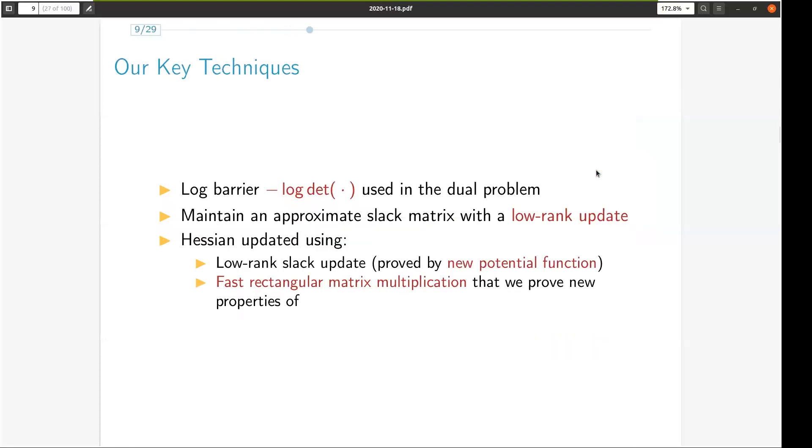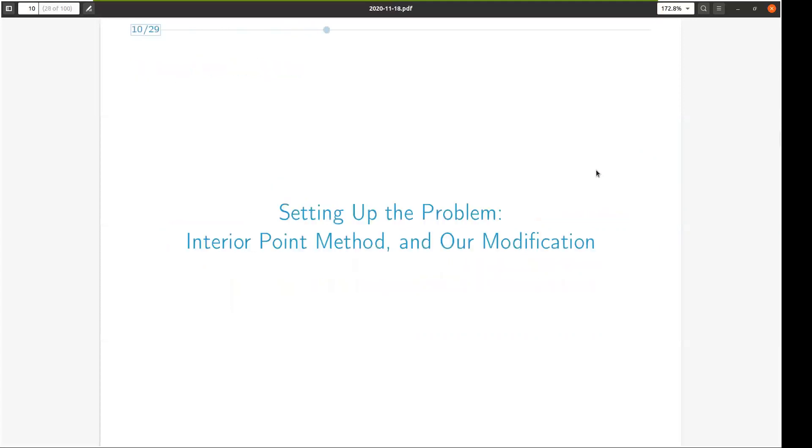Our two main tools are maintaining an approximate slack matrix that admits a low rank update and fast rectangular matrix multiplications. We now give a brief overview of standard interior point method and show our modification to it.